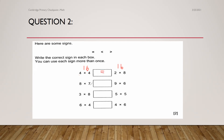The second one: 8 times 7 — start the times table and count up to 7 numbers: 8, 16, 24, 32, 40, 48, and 56. So my answer is 56. Then similarly for 9 times 6: 9, 18, 27, 36, 45, and 54. I can see 56 is larger than 54, therefore I have to use the greater-than sign. Next: 3 times 8 is 24 and 5 times 5 is 25. Since 25 is larger than 24, you have to use the less-than sign.